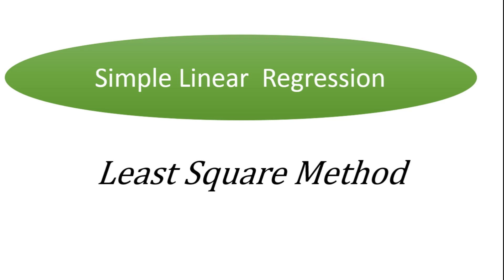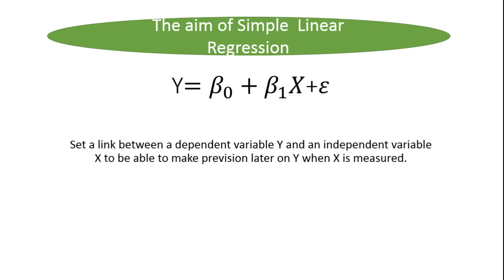When you present the two variables in the plane and notice that they seem to evolve in a linear manner in your scatter, you can build a simple linear regression model in order to set a relationship between your two variables. This relationship can then be used in order to make a forecast.